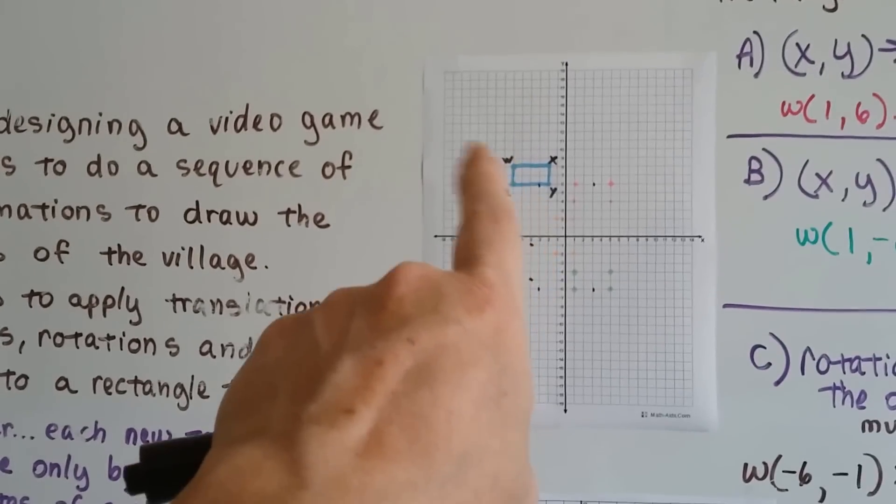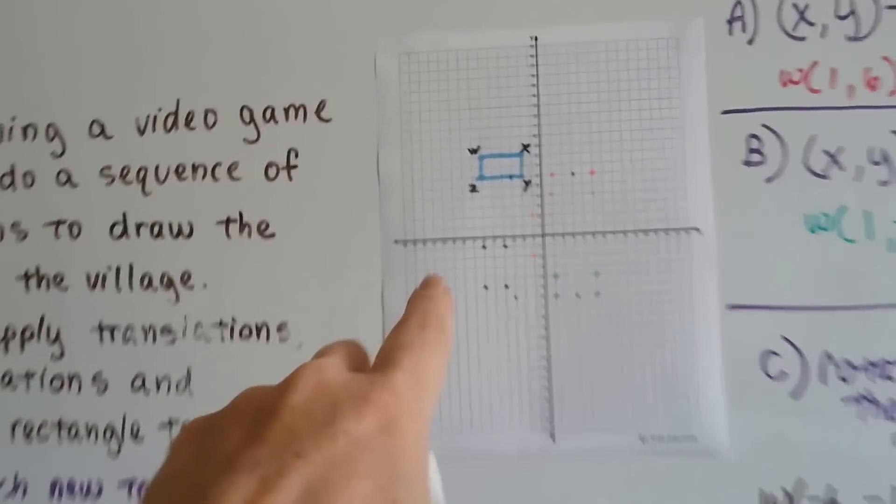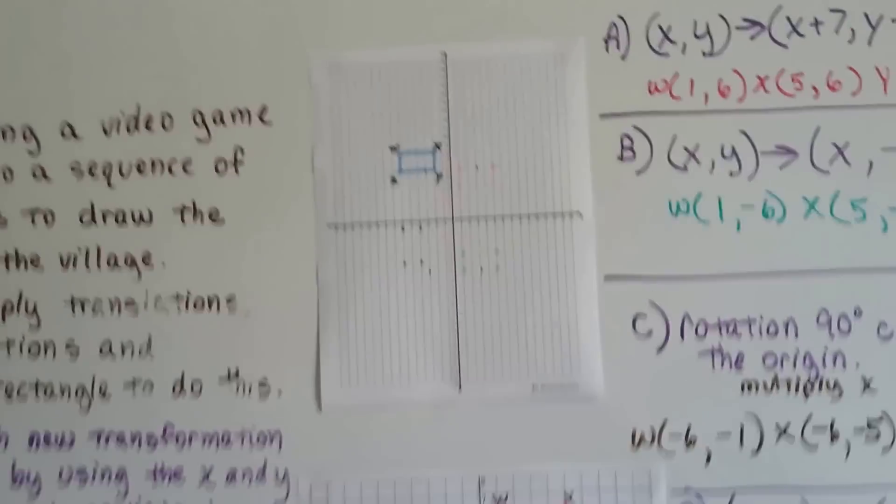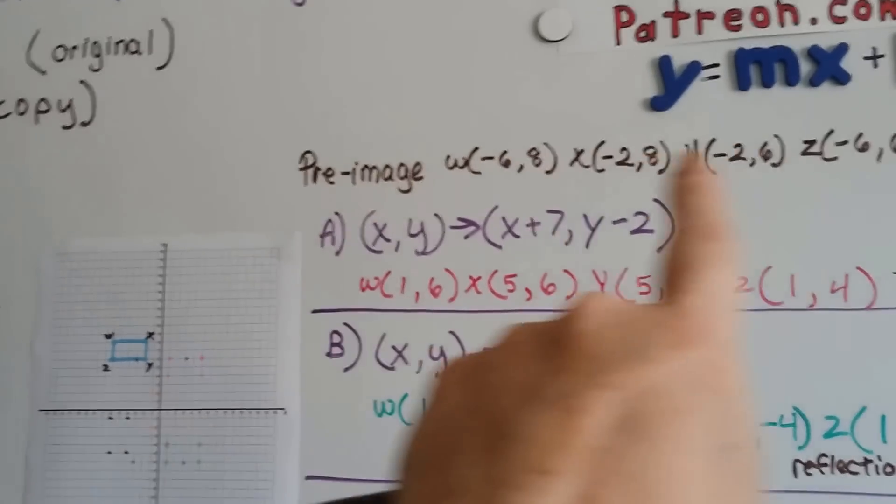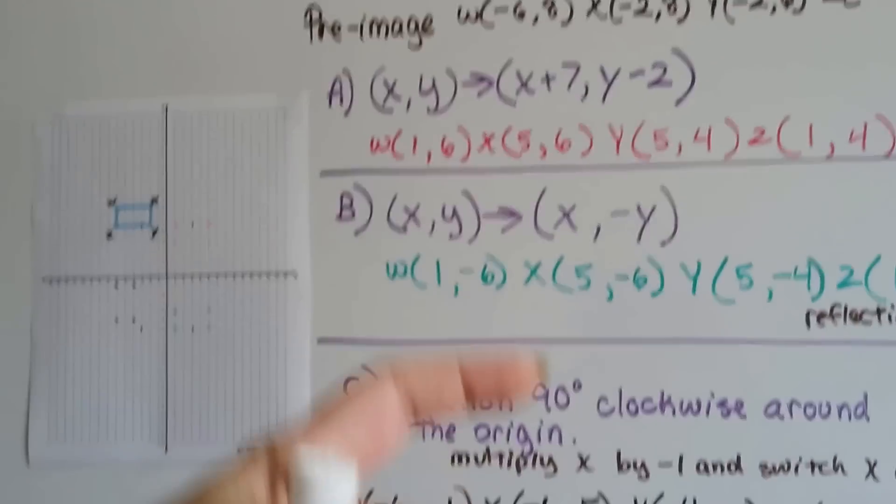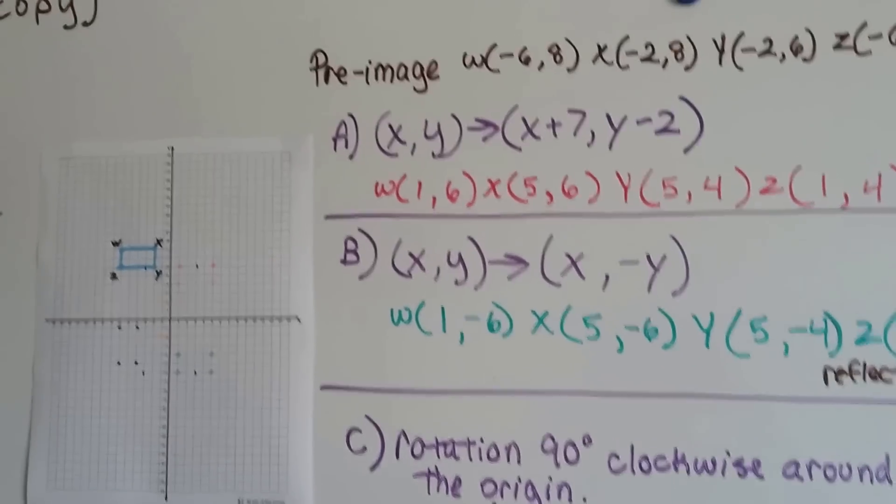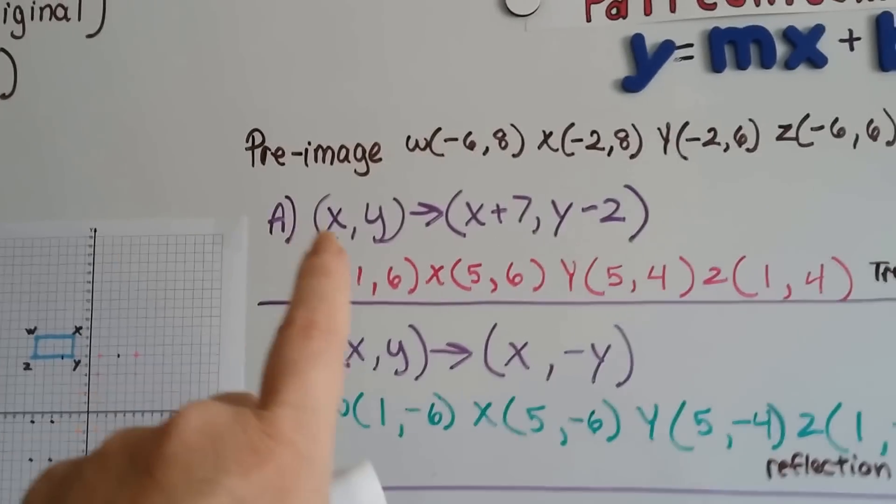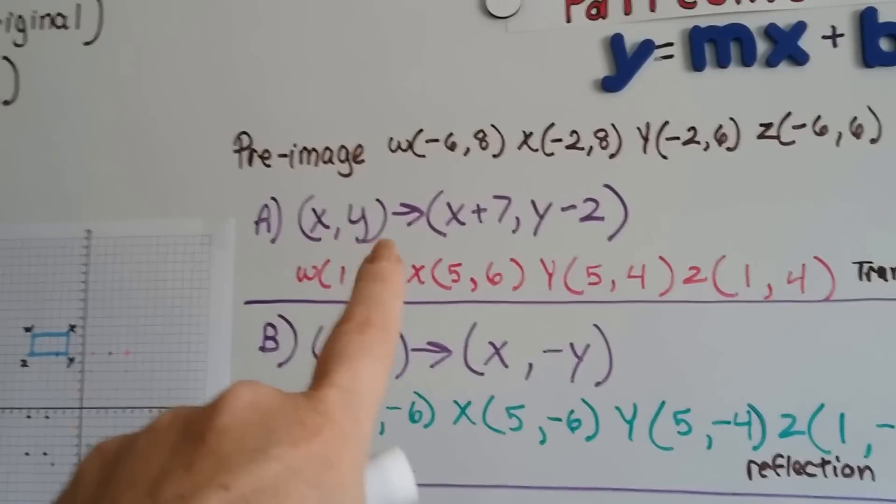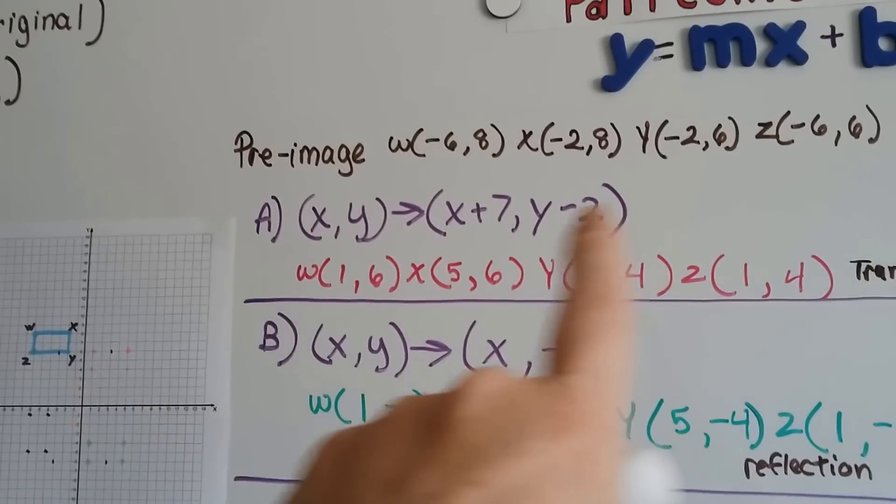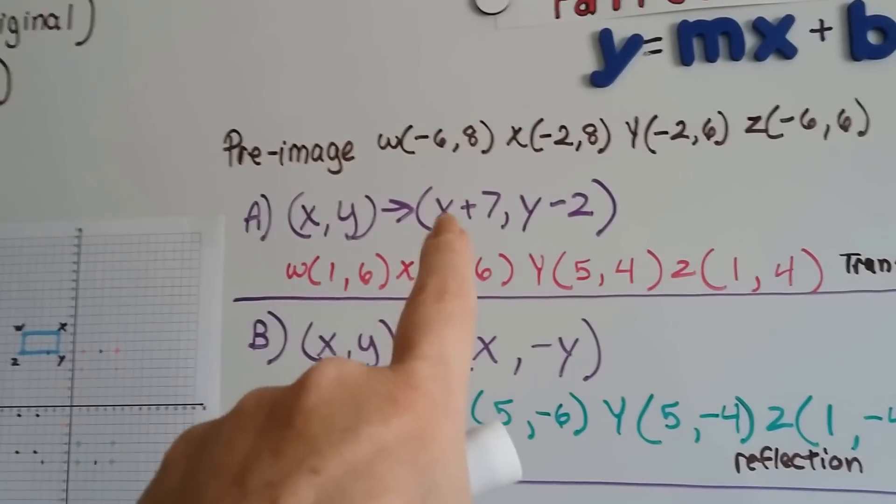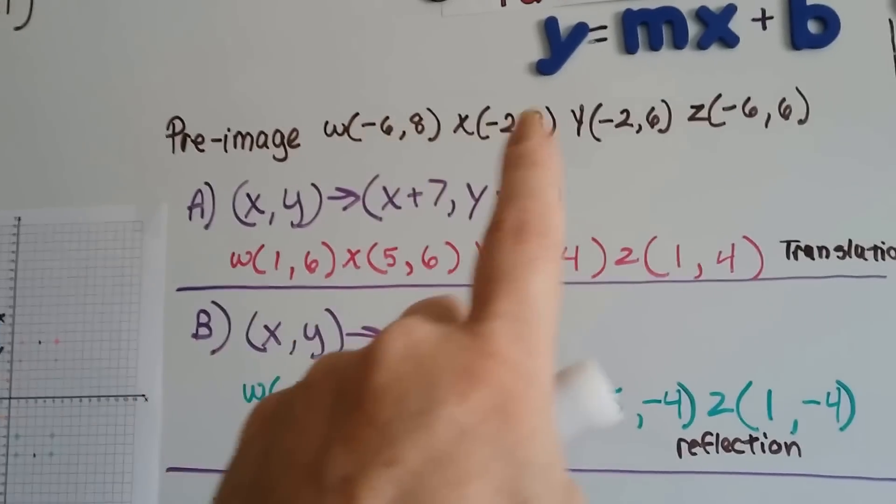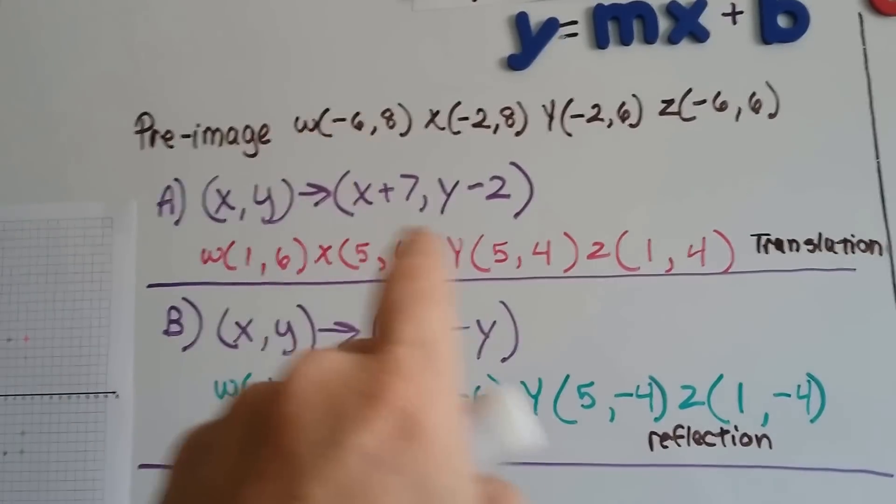So if the original image is this blue one, wxyz, coming around here, wxyz, what we need to do is mark down the coordinates for the pre-image, and then it's going to give us a list of what we're supposed to do. For the first image, it's going to be a pink one. It wants us to do, here's the mathematical notation for what they want us to do, x and y is going to have x plus 7 and y minus 2. For every single xy value, for point w, point x, point y, point z...